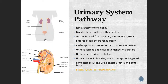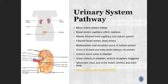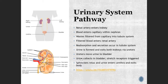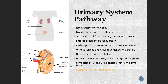Here's the pathway: the renal artery enters the kidney, blood enters the capillary within the nephron, waste is filtered out from the capillary into the tubule system, and then filtered blood enters the renal vein and leaves. Reabsorption and secretion occur in the tubule system. Urine forms and exits both kidneys via the ureters, which move urine to the bladder. When the bladder's stretch receptors signal it's time, the sphincters relax, urine enters the urethra, and exits your body.